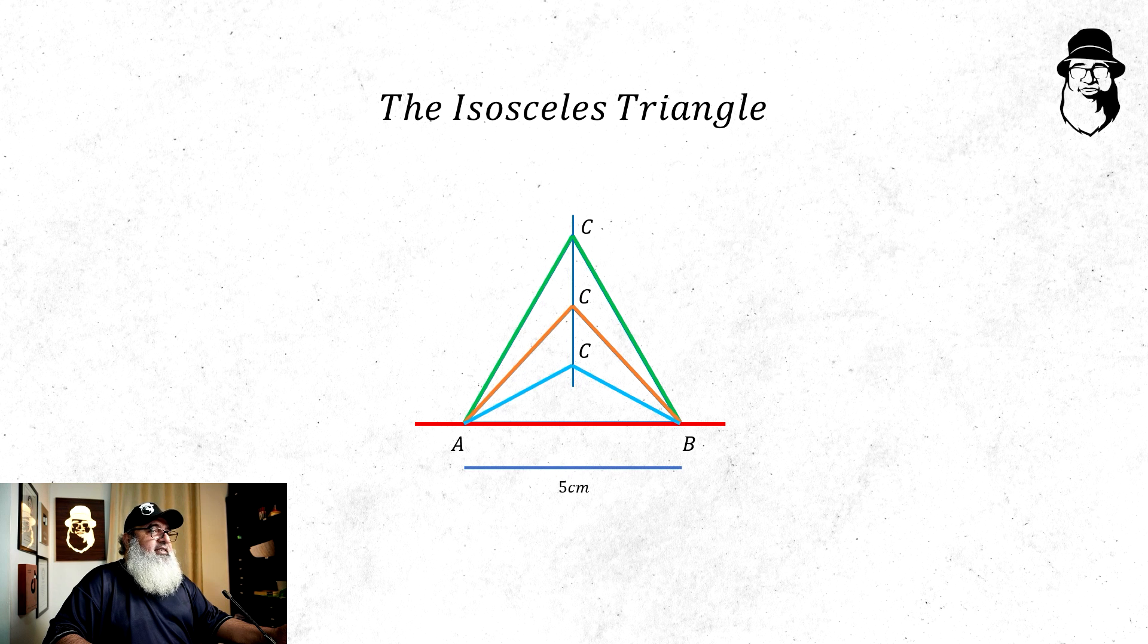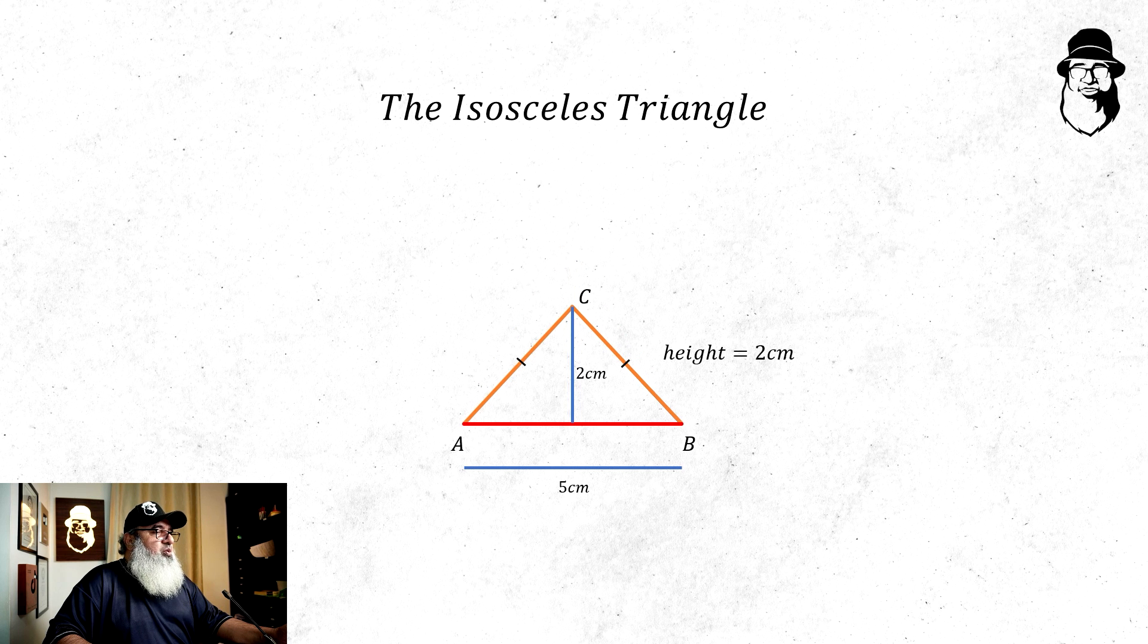So let's say the base is 5 cm long and C is 2 cm above the base. So we say the height of the triangle is 2 cm. A triangle like this which has just two sides that are equal is called an isosceles triangle.